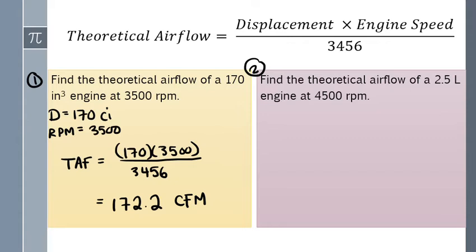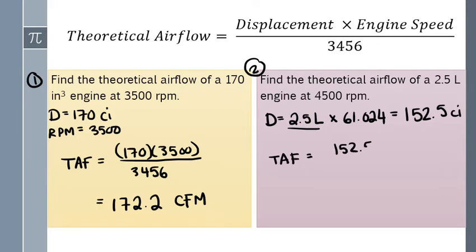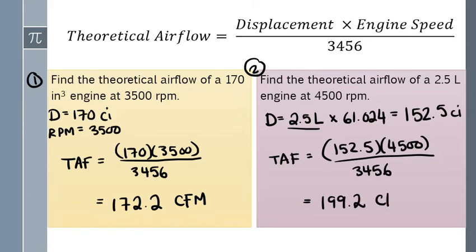Looking at number two. Our displacement is 2.5 liters. So you have a formula sheet that gives you all these awesome conversions. Pull it out. If you want to make cubic inches from liters, the math you need to do is multiply by 61.024, and that will give you 152.5 cubic inches. And I got that straight from the 8520 formula sheet or the Google search. All right, so now we're ready for the theoretical airflow formula. Our displacement in cubic inches, our engine speed 4500 RPM, and the number they gave us to put on the bottom. And you're going to get 199.2 cubic feet per minute.